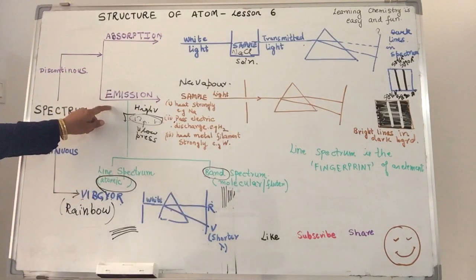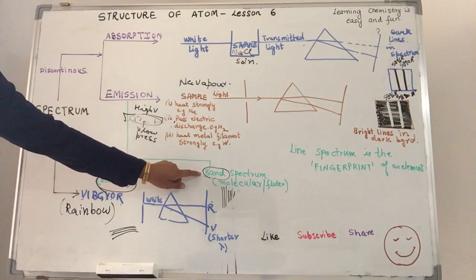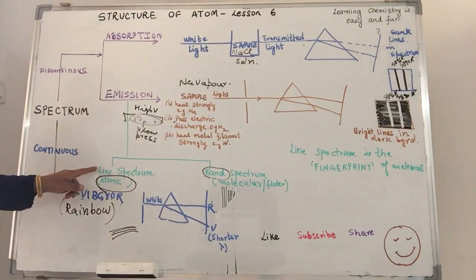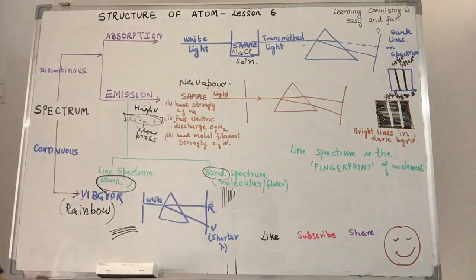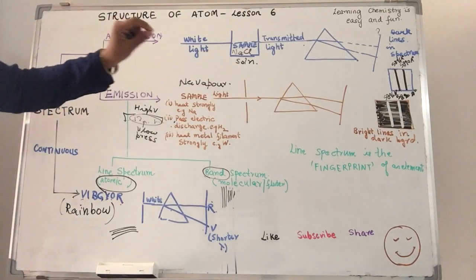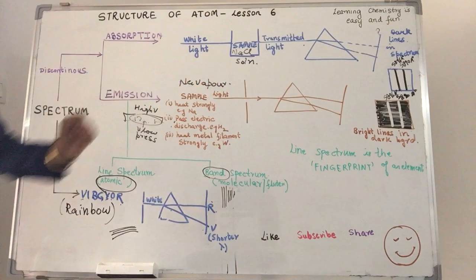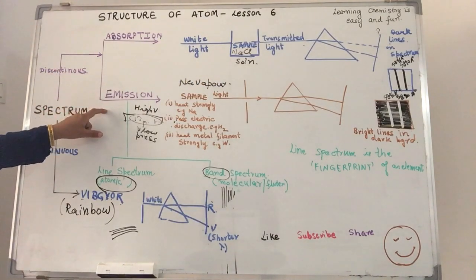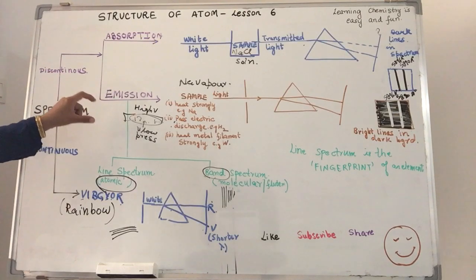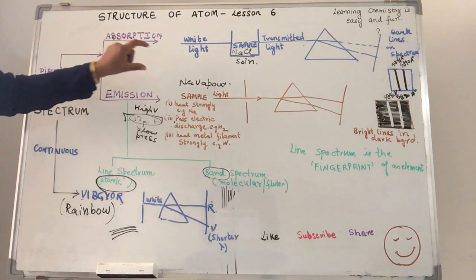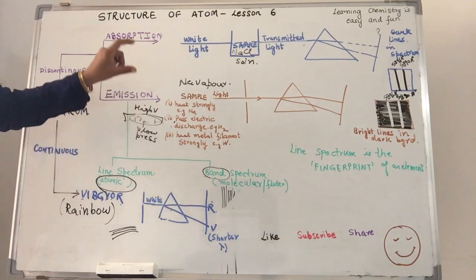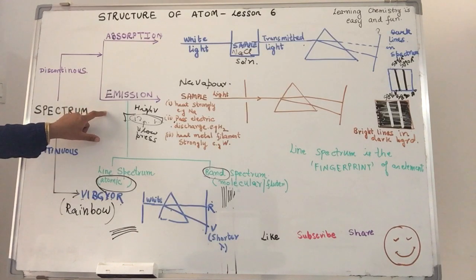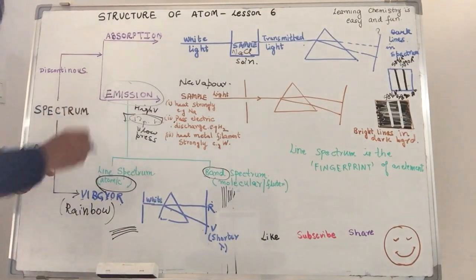So we have emission spectrum of two types, line and band. One of the spectrum, that is why we call line spectrum is the fingerprint of an element. In other words, the frequencies of the lights obtained in the emission spectrum will correspond, will be fixed for any element, whether it is in the form of an element or it is in the form of a compound. That is why we are able to identify elements even in their combined state by using the technique of spectrography.